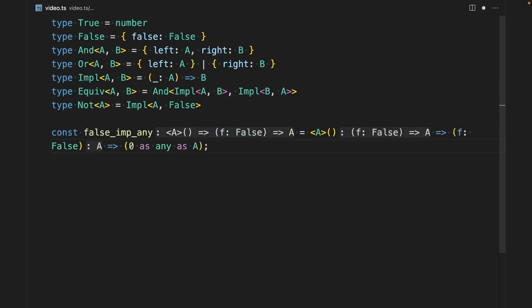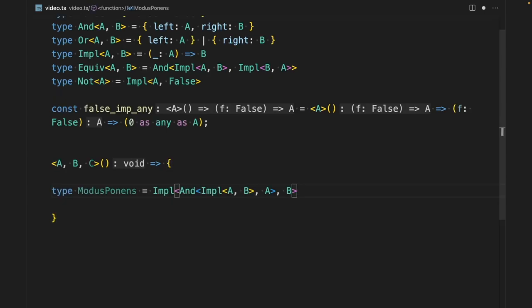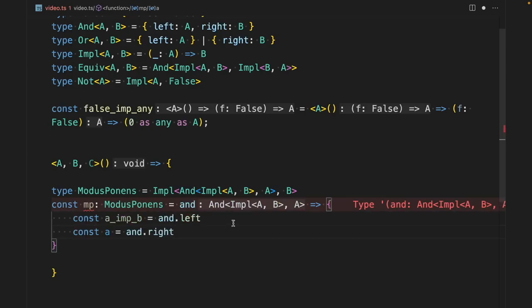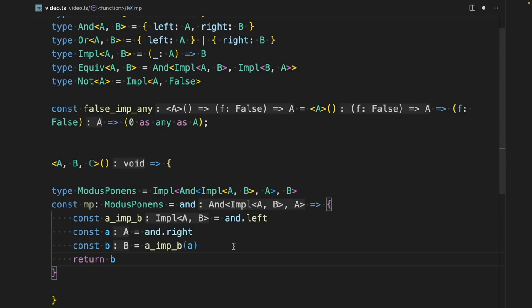Now the exciting part begins. You can ignore this bit of code. This is just to simplify the syntax by having global type variables. Let's use our types to represent the modus ponens. That is, given A implies B and A, then B must follow. What's really awesome here is that we don't need to assume it, we can prove it. Since modus ponens is an implication, we need to start with a function that accesses the premise. Now that we are inside the function, we need to prove B and return it. First, we can decompose the premise into A and A implies B. And using A as an argument to the function A implies B, we get B. That's it, the proof is done. Here TypeScript's type system guarantees our proof's validity.